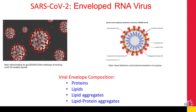SARS-CoV-2 is an enveloped RNA virus, meaning its genetic material is encapsulated in an envelope. The envelope consists of proteins — most notably the spike proteins, which extend outward from the envelope — as well as lipids, lipid aggregates, and lipid-protein aggregates. The composition of the viral envelope enables coronaviruses to be highly successful in their transmission and replication.